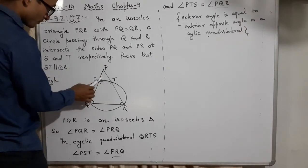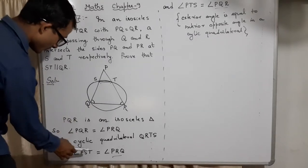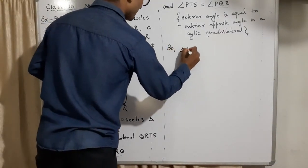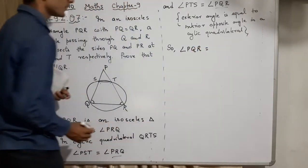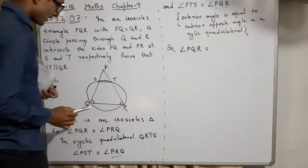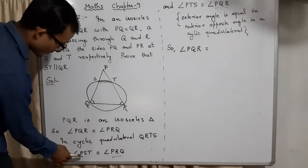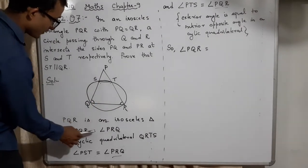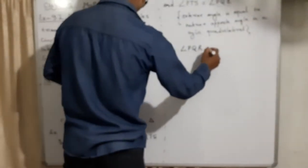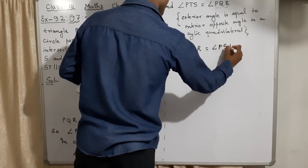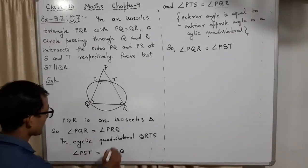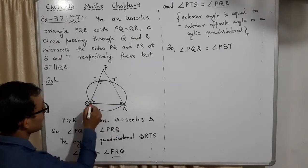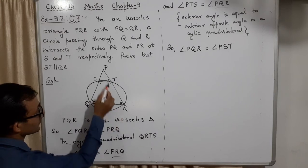We need these two angles to be equal. Angle PQR is equal to angle PTS — from the cyclic quadrilateral property. And angle PRQ is also equal to angle PST. Since PQR and PRQ are equal to each other, we get angle PRQ equal to angle PTS. So all these angles chain together: angle PST equals angle PRQ, angle PRQ equals angle PQR, and angle PQR equals angle PTS.